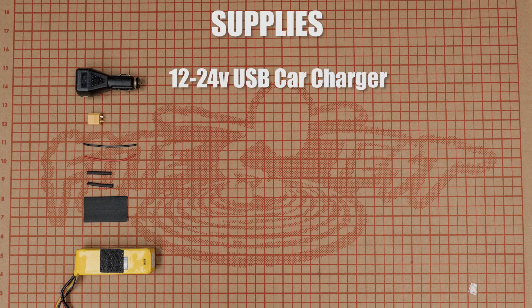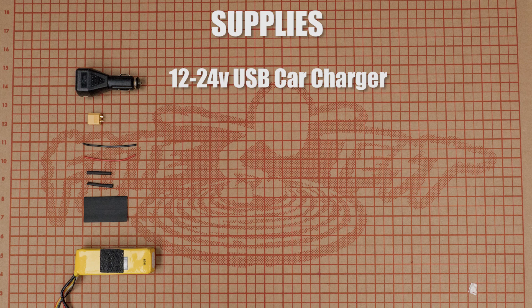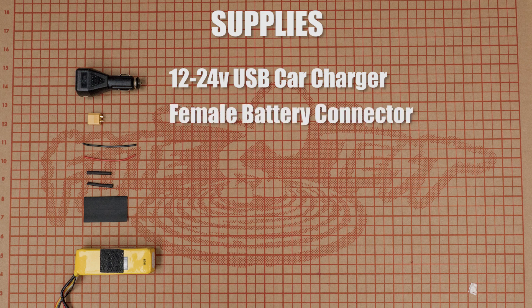Obviously, the first thing we're going to need is a car charger. Try to find one that operates between 12 and 24 volts. If you have one that only operates on 12 volts, you're not going to want to go above a three-cell battery. Along with the battery, you're going to need a way to connect it. So get an XT60 or if you use Deans or JST, you can use that as well.